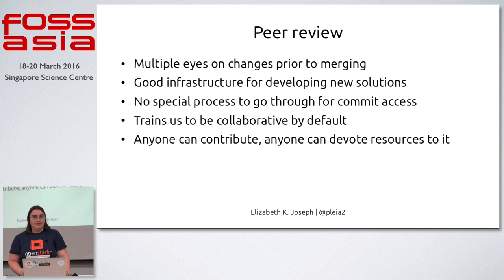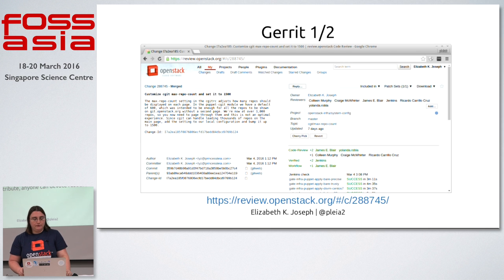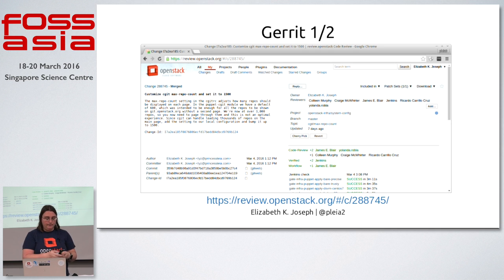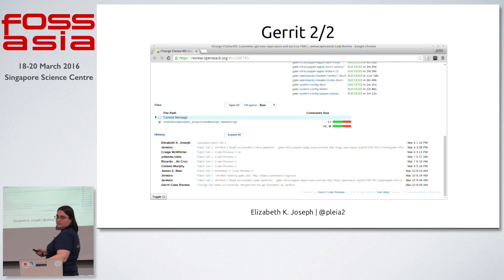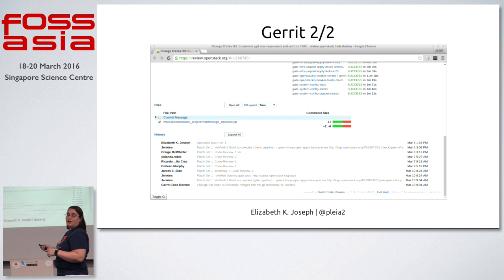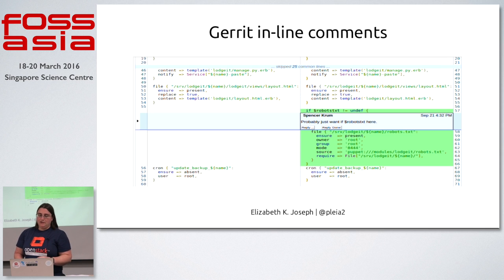That's the automated testing side of things. On the code review side, I've got some pictures of Gerrit. Gerrit is a code review system. You've got a commit message up top, a list of people who looked at the change, and the automated tests down at the bottom. Scrolling down, people will vote on your change and can also leave comments.